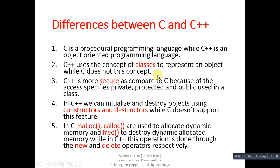Classes are available in C++ but not in C. The next point is: C++ is more secure compared to C because of the access specifiers — private, protected, and public — which are used inside classes in C++. In C, we do not use these access specifiers.